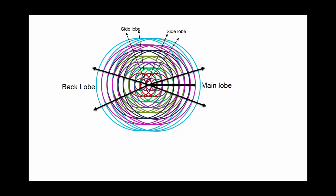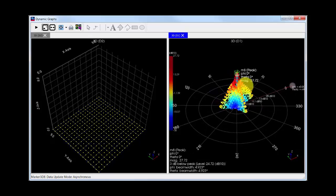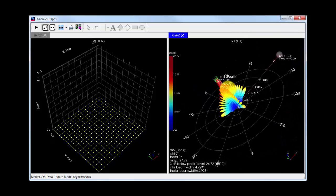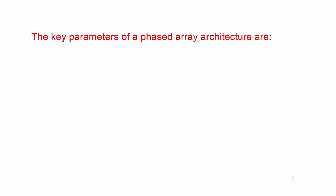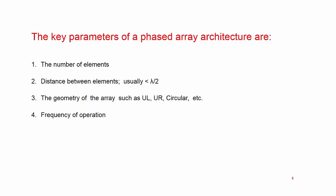A three-dimensional far-field pattern of a 20 by 20 rectangular array can be seen here. The far-field pattern and its characteristics are of utmost importance to baseband designers, RF designers, and antenna designers in a phased array system design. The key parameters of a phased array architecture are the number of elements, distance between elements which is usually less than lambda by 2, the geometry of the array such as uniform linear, uniform rectangular, circular, etc., the frequency of operation, and finally, the far-field pattern of individual elements. By choosing these parameters judiciously, we can arrive at a desired far-field pattern.